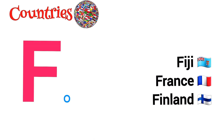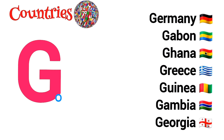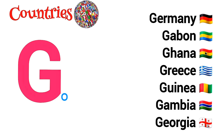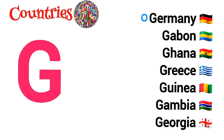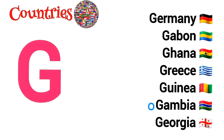F is for Fiji, France, Finland. G is for Germany, Gabon, Ghana, Greece, Guinea, Gambia, Georgia.